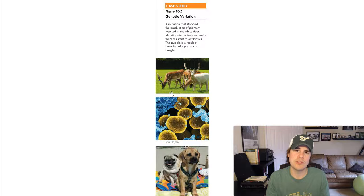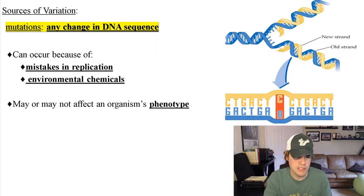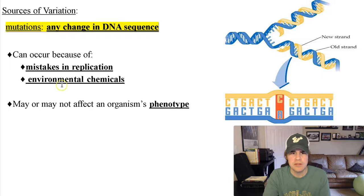Sexual reproduction is another source of genetic variation. Mutations are the first source of genetic variation — any change in DNA sequence. They can occur due to mistakes, environmental chemicals, food, or radiation levels. Any time there are changes in DNA sequences, those are mutations.